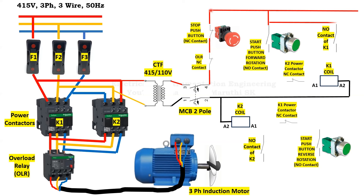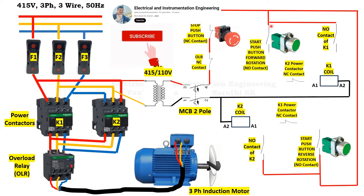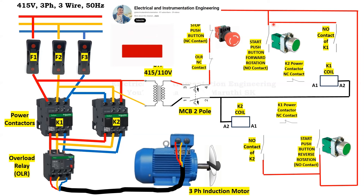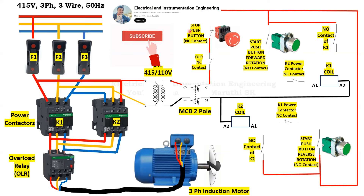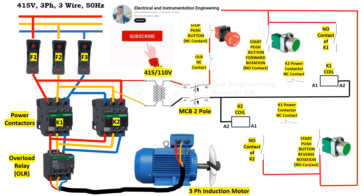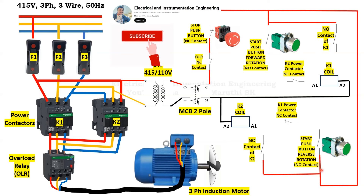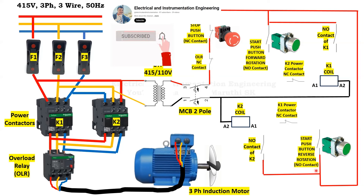We extend the phase from the stop push button NC contact up to the start push button NO contact for forward rotation. A parallel connection is taken from the start push button up to the NO contact of K1. From the common point after the stop push button, the supply is also extended up to the start push button for reverse rotation incoming terminal — also a NO contact — and a parallel connection is taken up to the NO contact of K2 power contactor.